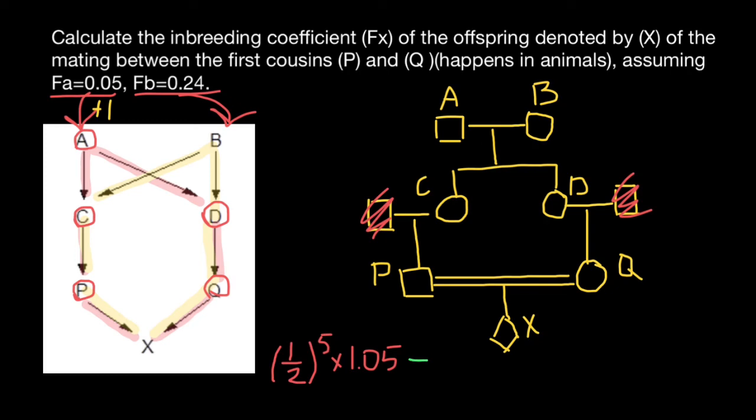We have another loop here. Plus, here's another loop. It is going to be as follows. We also have the following nodes here: one, two, three, four, and five. So again, we have 1/2 to the power 5 times, and inbreeding of individual B is 0.24. So again, we have to add one to this number, plus one. And we have to multiply by inbreeding of individual B, which is going to be 1.24.